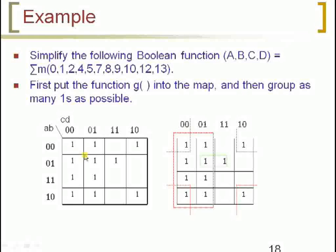Then you have to form the blocks, and always we have to go with maximum-sized grouping. These are adjacent cells, and we can go with a group size of 8. I have formed a group whose size is 8. Then these cells are adjacent, so I am making one more block of 4 cells. And these two are adjacent, so I am making one more block of 2 cells.